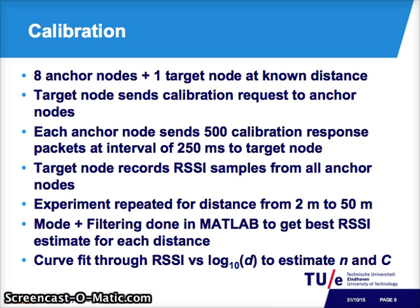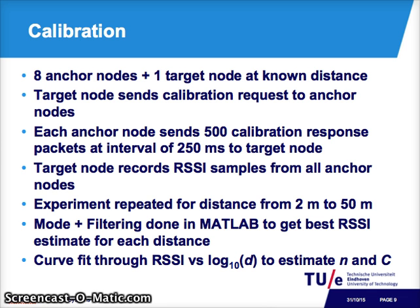For calibration, we use eight anchor nodes and one target node, placing the anchors at known distances from the target. When the target node comes up, it sends a calibration request to the anchor nodes. Each anchor node sends 500 calibration response messages at an interval of 250 milliseconds. The target records the RSSI samples from all anchors. This experiment is repeated for distances from 2 meters to 550 meters. Mode-plus filtering in MATLAB then gives the best RSSI estimate for each distance, after which we do curve fitting to estimate n and c.